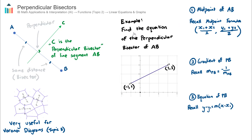Let's try an example. We are asked to find the equation of the perpendicular bisector of line segment AB. The perpendicular bisector is going to look something like this — cutting through at a right angle and passing through the midpoint between A and B. We're going to find exactly where that midpoint coordinate is, find the gradient of the perpendicular bisector, and then find the equation of that line — a three-step process.